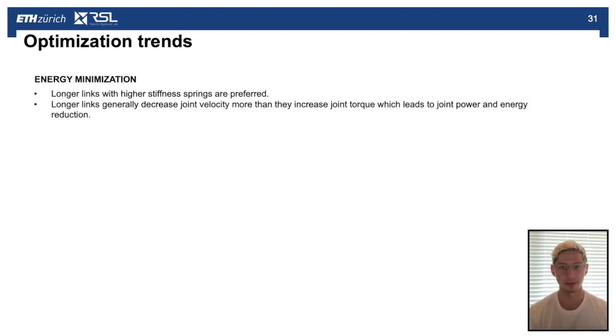Now I'll talk about the trends that we observed in these optimization cases. Firstly, for energy minimization, we find that these designs prefer longer links with higher stiffness springs. Longer links generally reduce the joint velocity and increase the joint torque, so there we have a trade-off of these two different metrics. The trade-off here indicates that the reduction in joint velocity is dominant because we found designs that preferred a lower velocity, higher torque in order to minimize the energy.